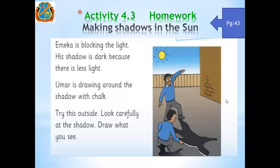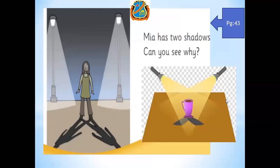The next question — you can see what you have seen. Amal Mia has two shadows. Can you see why? Look at the screen, everyone.